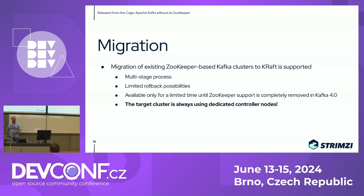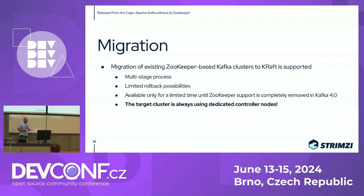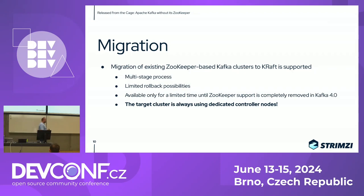If you're running ZooKeeper-based clusters today, we don't want to leave you behind. There is a migration process allowing you to migrate existing ZooKeeper-based clusters to KRaft-based clusters — a multi-stage process where you go through several stages to migrate all metadata to the KRaft quorum. There are some important caveats. First, you can only migrate to the dedicated controller node architecture — the one on the right side of the slide. If you want mixed nodes, you'd need to migrate to that after running KRaft. The rollback possibilities are also limited: once you're running the actual KRaft cluster, there's no simple way back to ZooKeeper.